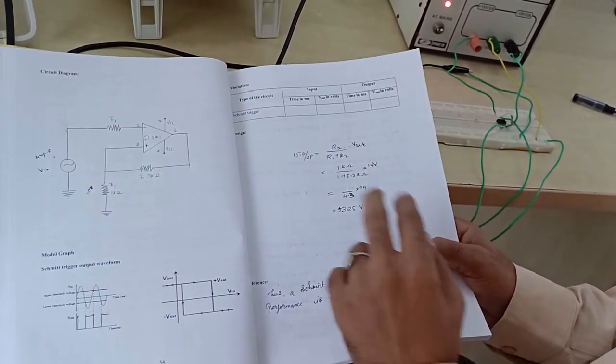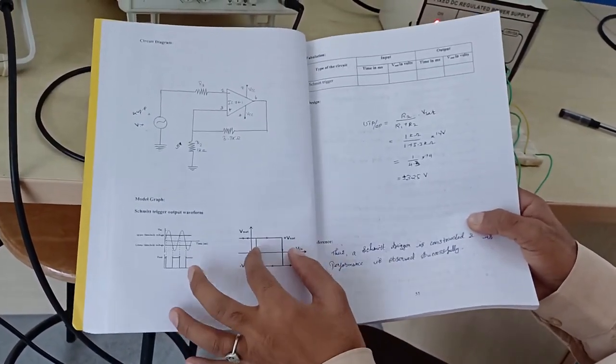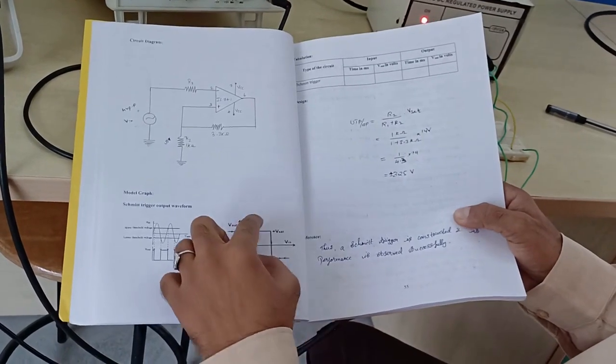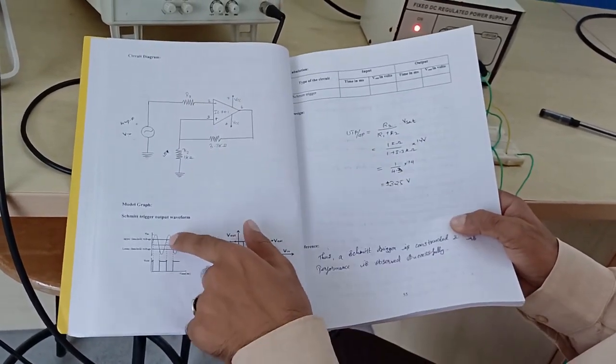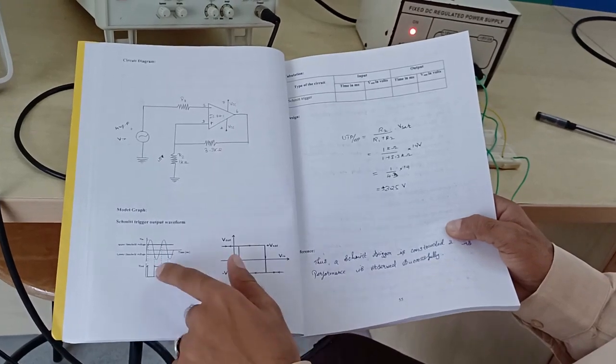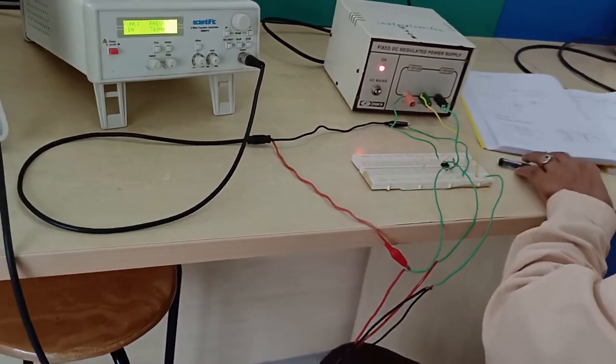We are going to verify this through the experiment and we are going to see the hysteresis. Through the hysteresis we are going to prove these voltages, Vsat and the UTP LTP values. Input is sine wave and output will be a square wave. We will see the experiment.